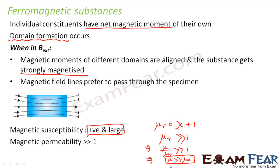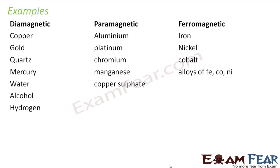Now let's look at some examples. Under diamagnetic: copper, gold, quartz, mercury, water, alcohol, and hydrogen. Under paramagnetic: aluminum, platinum, chromium, manganese, and copper sulfate. Under ferromagnetic: iron, nickel, cobalt, and alloys of iron, cobalt, and nickel. These ferromagnetic materials are very strongly magnetized — that is why nails get attracted very fast when you bring a magnet near them.